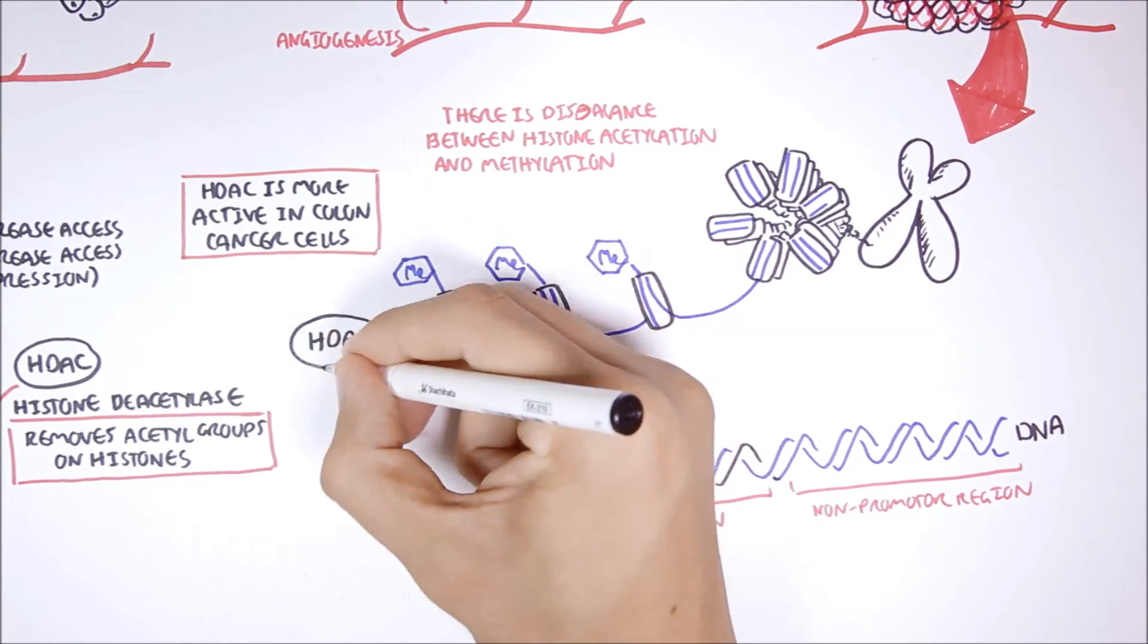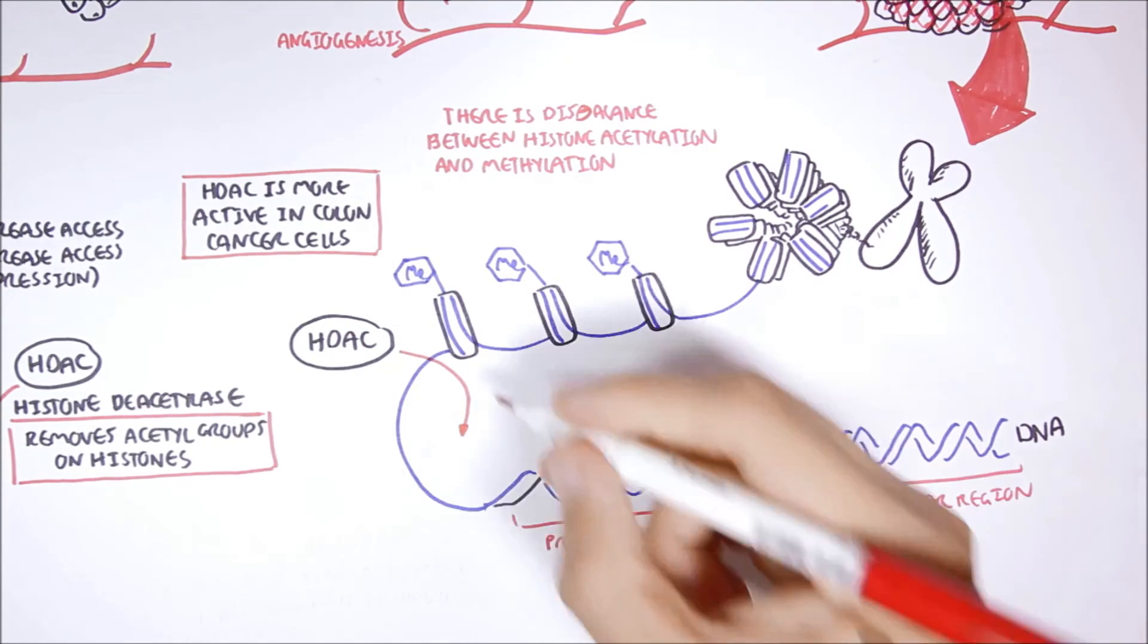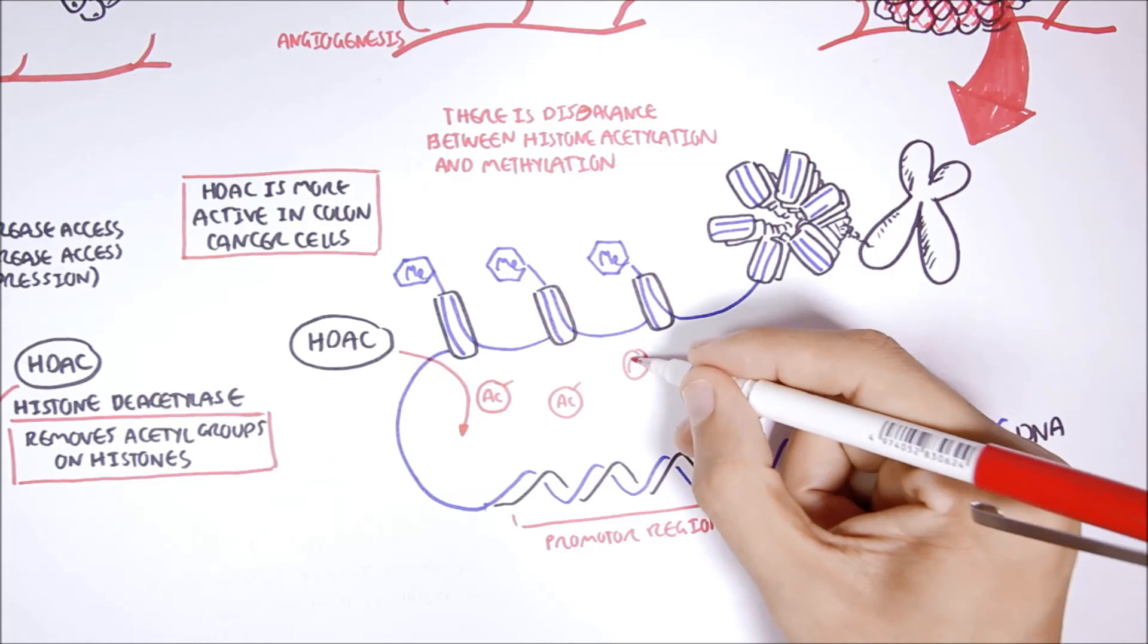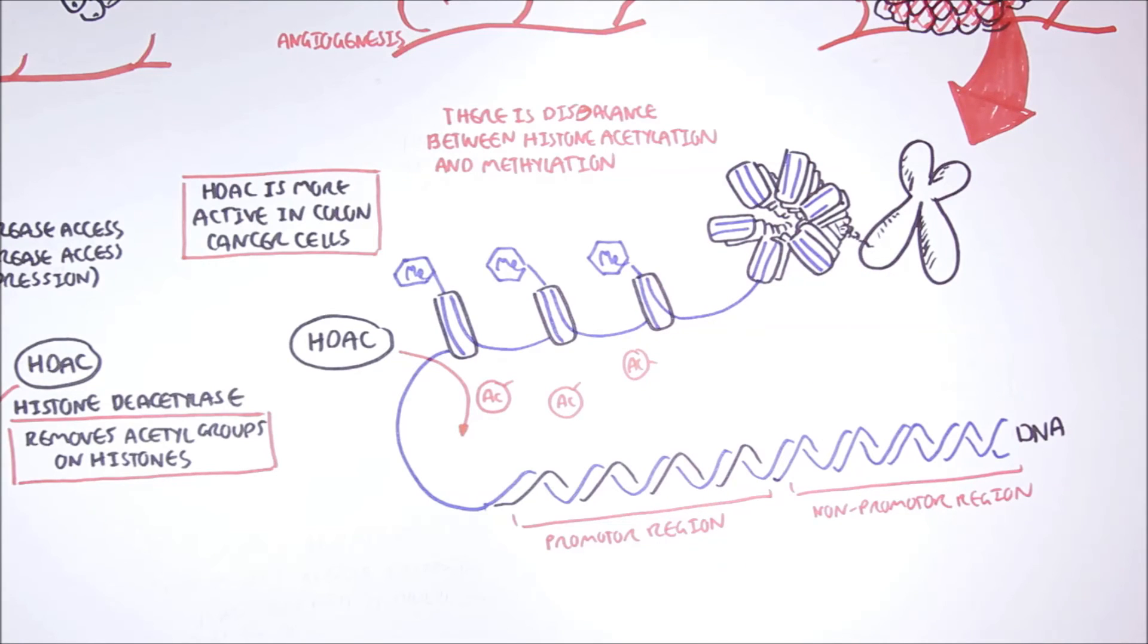So, here, HDAC is removing all the acetyl groups on histones, resulting in more methylated histones.